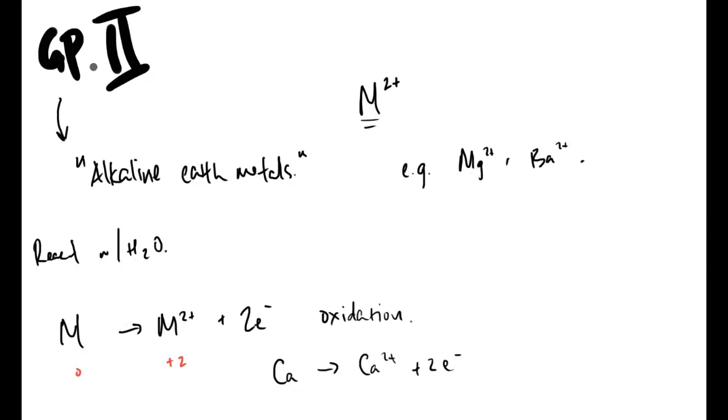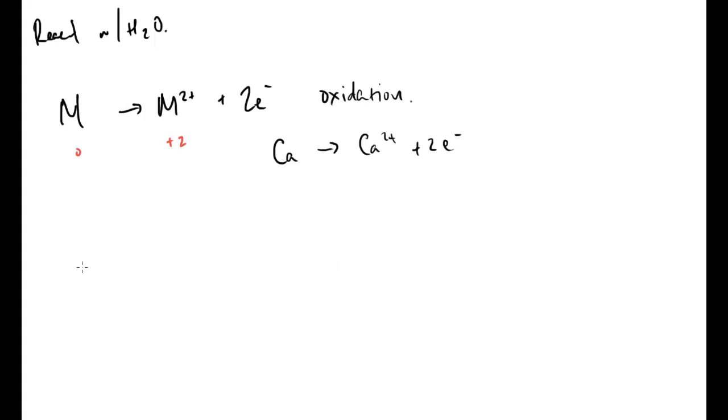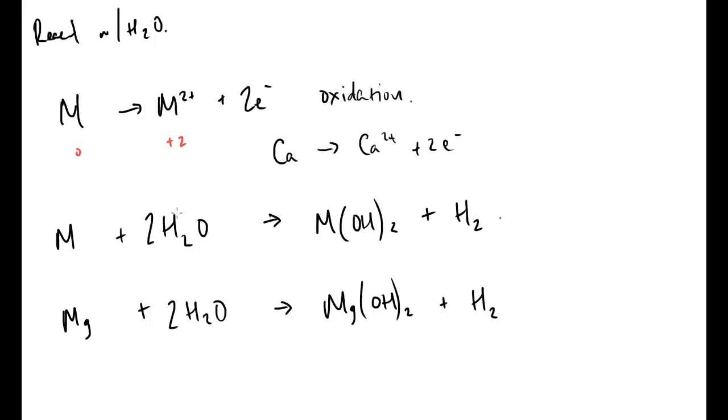Going into more detail about the reaction with water - the metal reacts with water to form specifically the hydroxide. That's very important. Using the generic M: M plus 2H2O gives us M(OH)2 plus H2. All you have to do is substitute the element you're dealing with. So magnesium: Mg plus 2H2O forms magnesium hydroxide plus hydrogen. We must balance our hydrogens and oxygens.